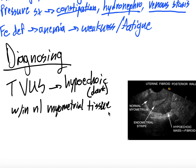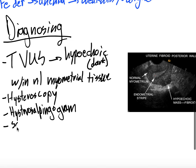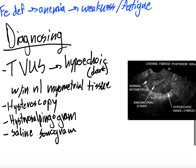Other diagnostic options include hysteroscopy, where you take a camera up through the vagina and cervix into the uterus to visualize submucosal fibroids. You can do a hysterosalpingogram, which is another way to visualize the tissues. And you can do a saline infusion sonogram. Primarily, diagnosis is going to be transvaginal ultrasound — looking for that hypoechoic mass coming off the mixed echoic myometrium.